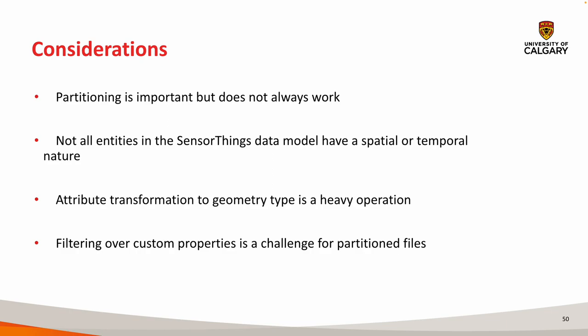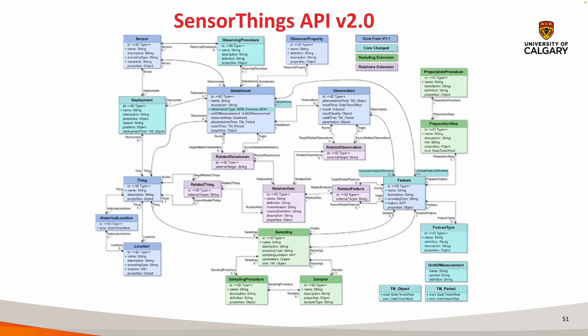Attribute transformations to a geometry type, as the GeoParquet spec describes, is a heavy operation. We have given users some freedom to encode their location data in different formats. Filtering over custom properties is also a challenge. We are working on version 2.0, which looks complex but we've just given the user more freedom and flexibility to model custom applications.